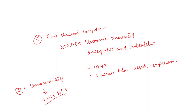UNIVAC was developed in 1951. It was the computer built at the largest commercial scale. It used magnetic tapes for input and output data.